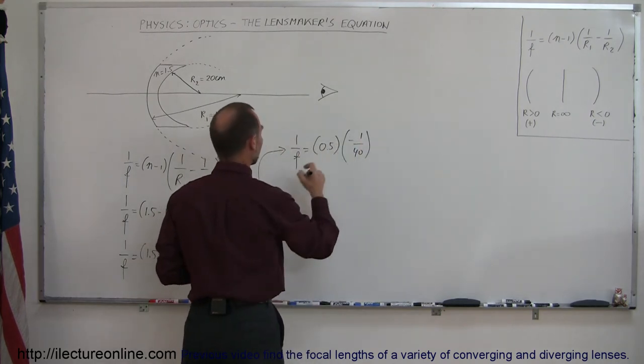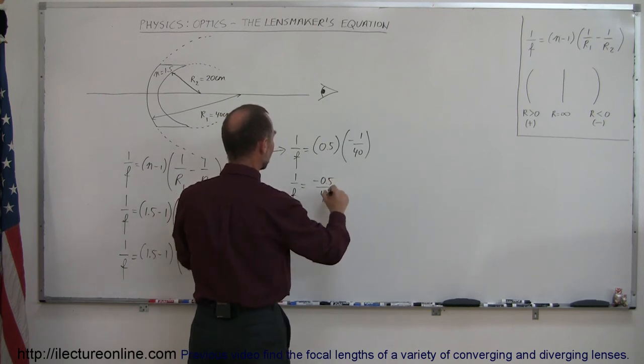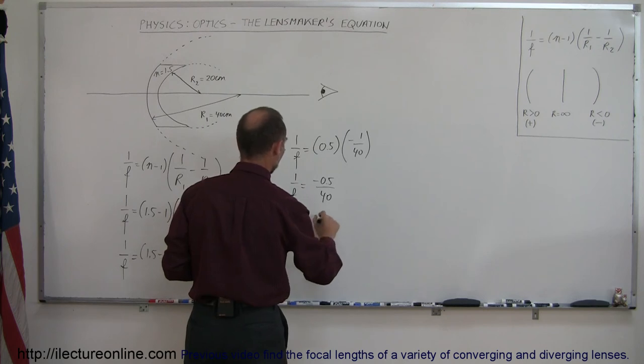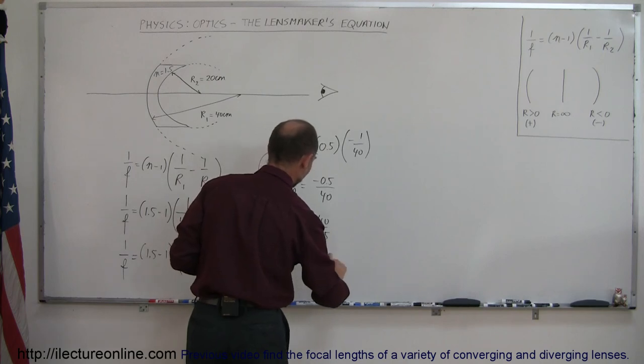And then multiplying this through, we get 1 over f is equal to minus 0.5 over 40. And if I take the inverse of that, we get f is equal to minus 40 over 0.5. And of course, f would then be minus 80, and that would be in centimeters.